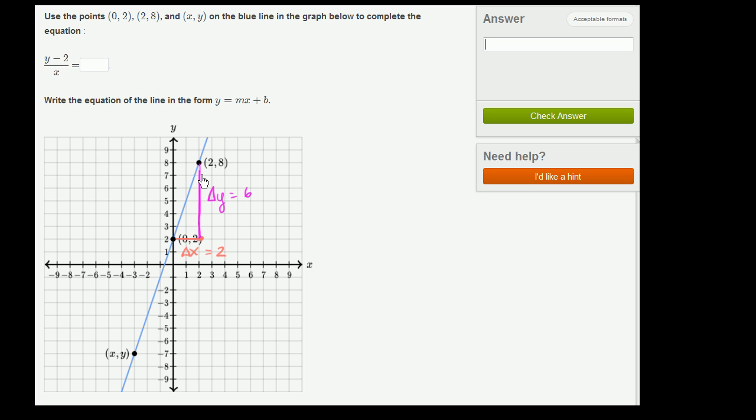So if you constructed a right triangle like this, this side's length is 6, this side's length is 2, and the ratio of this height to this base is going to be the slope of your line. So delta y over delta x is equal to 6 over 2, which is equal to 3.